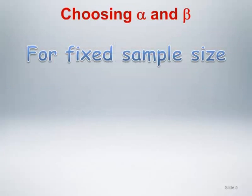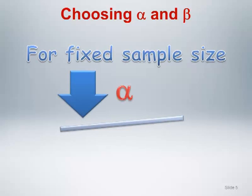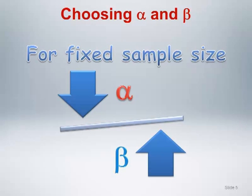For a fixed sample size, there is a trade-off between the alpha and beta error rates. If you decrease the alpha error rate so that you make fewer type 1 errors, this will cause the beta error rate to increase, resulting in more type 2 errors.